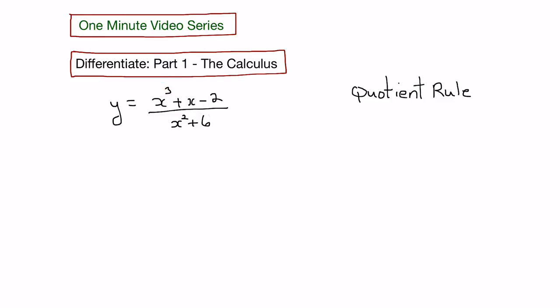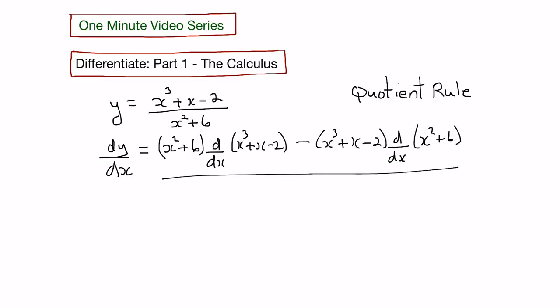The quotient rule states that the derivative would be the bottom function times the derivative of the top function, minus the top function times the derivative of the bottom function, all over the bottom function squared.